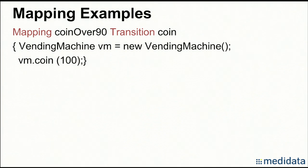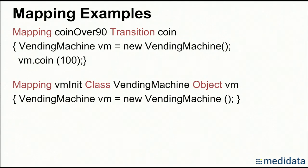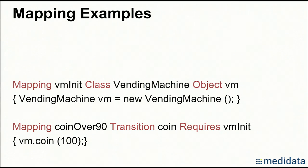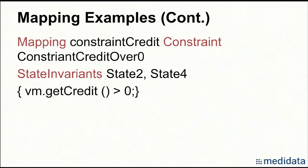Here is an example of an element mapping for the transition 'coin'. In the test code, we first initialize the vending machine system, and then insert a dollar into it. If the vending machine object initialization is also used by other element mappings, we can extract it into a separate object mapping called VMUnit. The previous element mapping then simply requires the object mapping VMUnit. This is another element mapping for a constraint requiring that credit must be greater than zero. This constraint is used as a state invariant in states two and four.